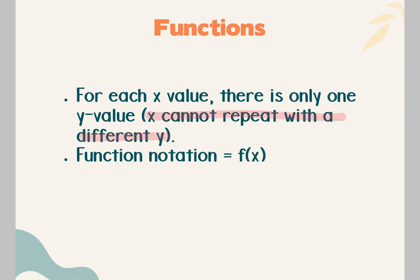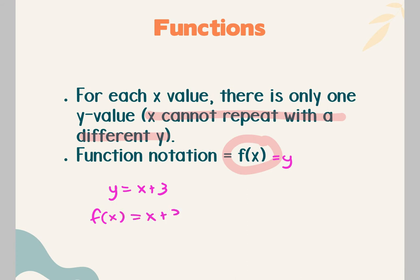X can repeat as long as the y also repeats — you could have a duplicate point. But if you have one x with more than one y, so a point would be above or below it directly in line, then it can't be a function. Instead of a y, you'll now see f of x. F of x is the same thing as y. So if I had y equals x plus 3, you'll now see it written as f of x equals x plus 3 — those mean exactly the same thing. The difference is they just won't be only lines anymore. An x can't repeat with a different y — you can't have x with y being 1 and x with y being 5. That would not be a function.